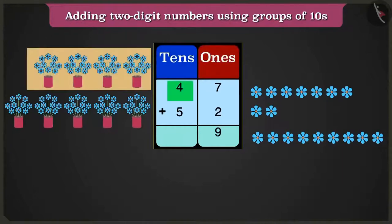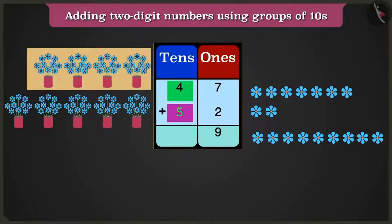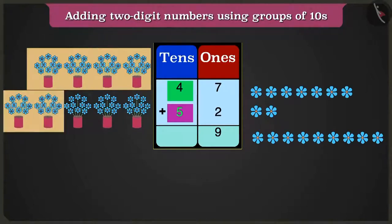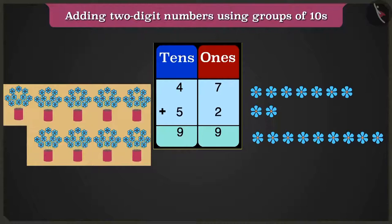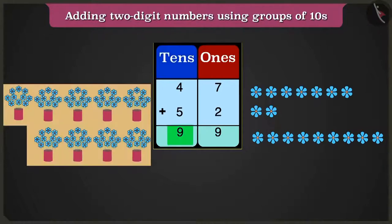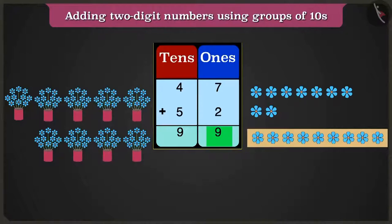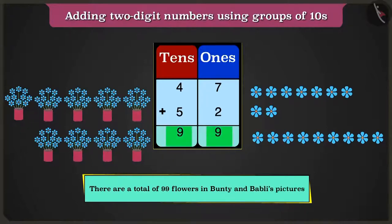Now in the box of tens, four added to five — count after four: five, six, seven, eight and nine is what we get. Hence, there are nine tens and nine ones. So Bunty and Bubbly's drawing have a total of ninety-nine flowers.